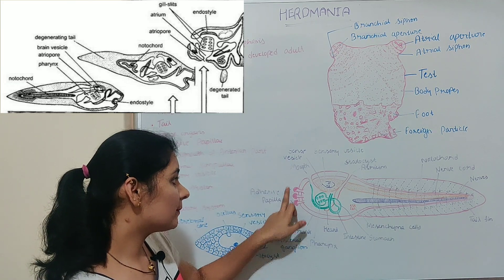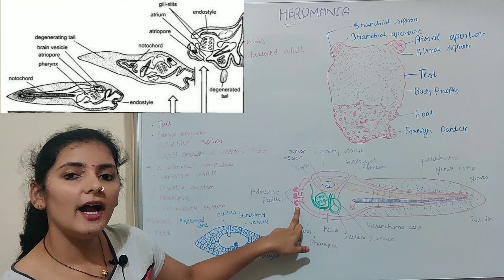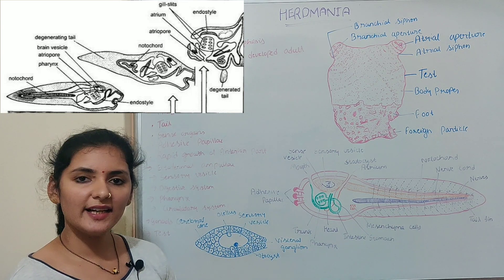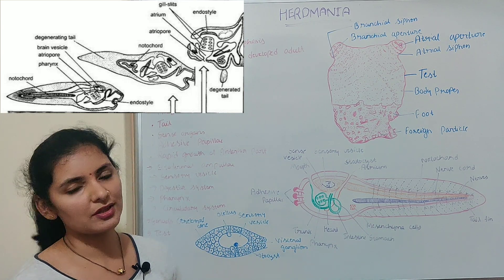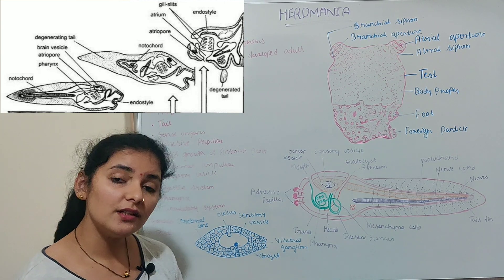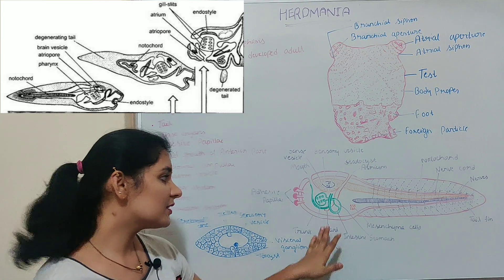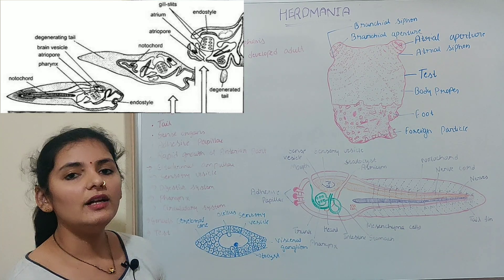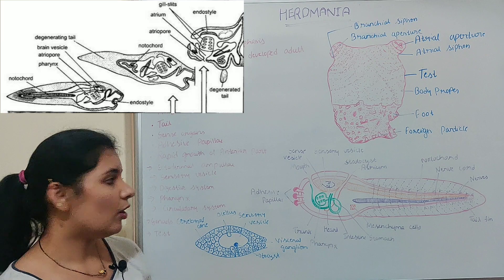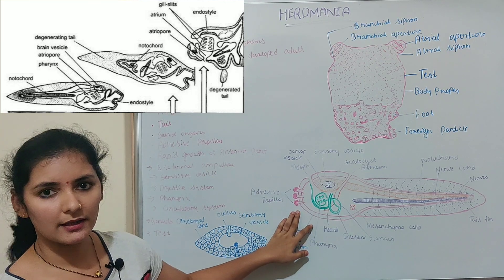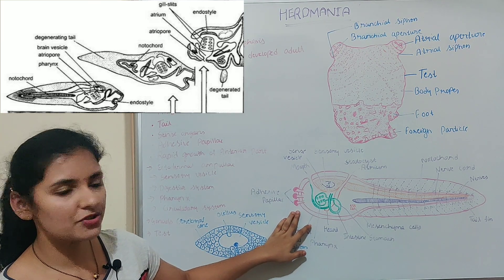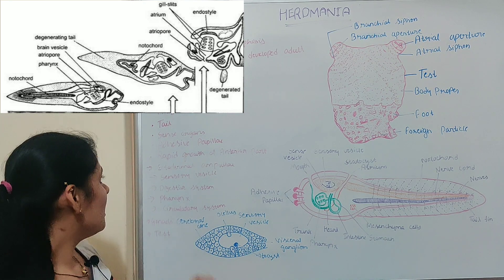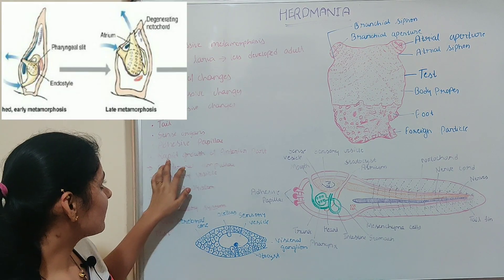Adhesive papillae are present at the anterior-most part, and with their help the larva attaches itself to a suitable substratum. After the attachment of the larva to the substratum, the adhesive papillae disappear and are lost.